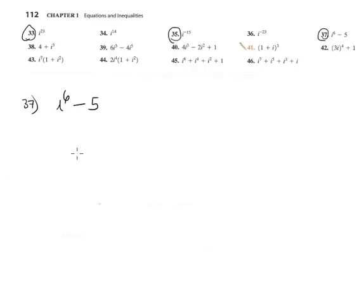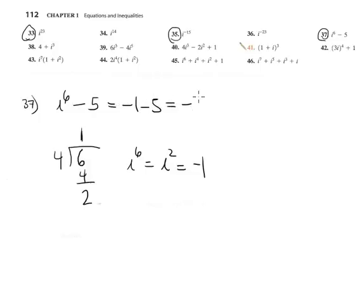Problem 37. i to the 6th power is 6 divided by 4, is 1, the remainder is 2. So i to the 6th power equals i to the 2nd. The i to the 2nd is negative 1. So the answer is negative 1 and negative 5 is negative 6.